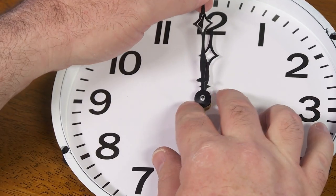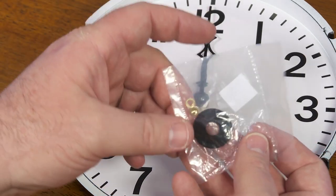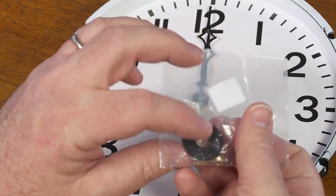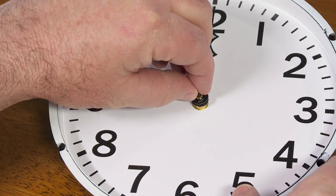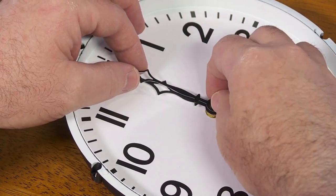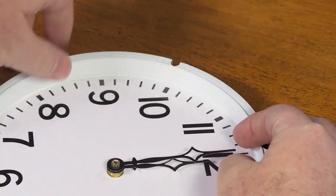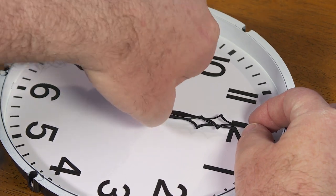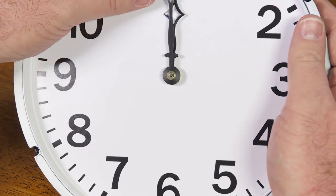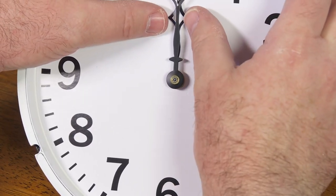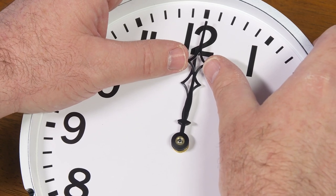Now the minute hand is going to go right here, and there's actually a tiny little nut to hold that in place. There's some hardware that comes with your clock motor. So I'm going to put this tiny nut on here and tighten it by hand. I want to make sure that both hands are pointed as close as I can get them to straight up at the 12. I can use my fingers just a little bit to nudge them one way or the other.